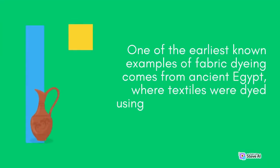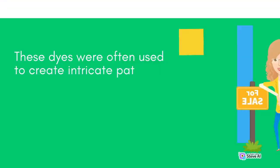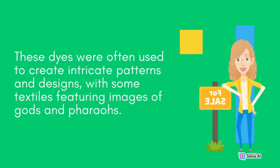One of the earliest known examples of fabric dyeing comes from ancient Egypt, where textiles were dyed using natural materials such as indigo and madder root. These dyes were often used to create intricate patterns and designs, with some textiles featuring images of gods and pharaohs.